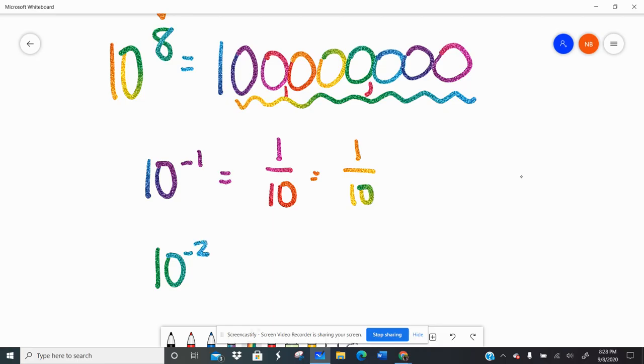10 to the negative 2 is 1 tenth times 1 tenth. Remember, negative exponents don't make negative numbers, they make small numbers, which is 1 hundredth.